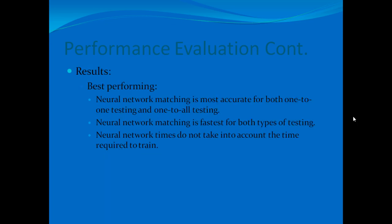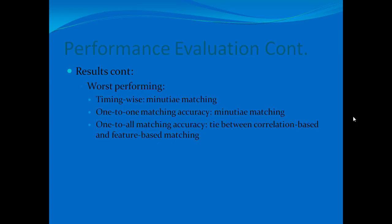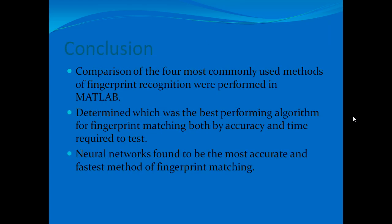The results show that the best-performing algorithm across all conditions was neural network matching — providing the fastest times and highest accuracy for both forms of testing. However, neural network times do not account for training time, which can range from minutes to hours or even days for large networks. The worst-performing algorithm by timing was minutiae matching; for one-to-one accuracy it was also minutiae matching; for one-to-all accuracy, correlation-based and feature-based tied as worst. In conclusion, neural networks were found to be the most accurate and fastest method of fingerprint matching.